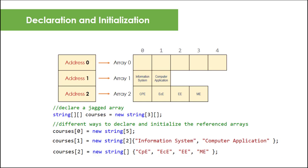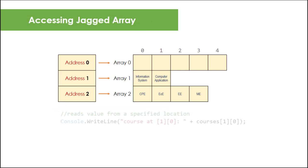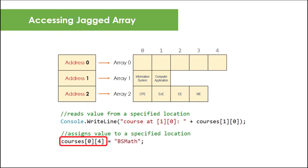To access element in a jagged array, just provide the array name and specify the row and column in two separate square brackets. This code reads information system and prints it in a console window, and this code assigns a new value of BSMATH at location zero four.